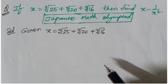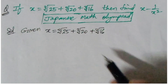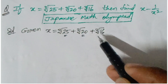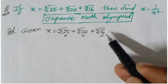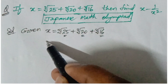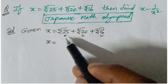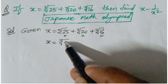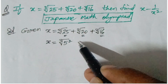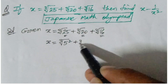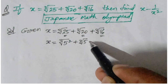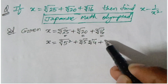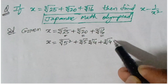We can write 25 as 5 squared, 20 as 5 times 4, and 16 as 4 squared. So the new equation becomes: cube root of 5 squared, plus cube root of 5 times 4, plus cube root of 4 squared.